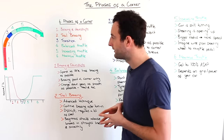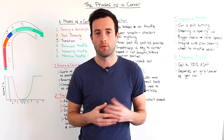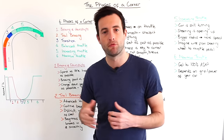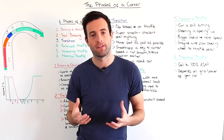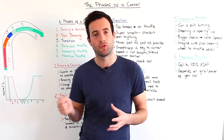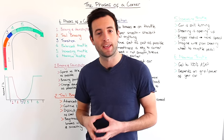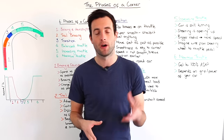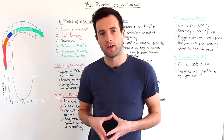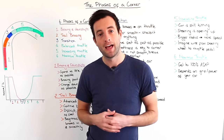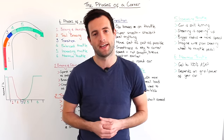Another thing to think about when braking is that you may have to change down one, two, three, even four gears before you get to the corner. If you're in a manual car it's very important that you do these downshifts as smoothly as possible. If you don't do them smoothly it could upset the rear or the front of the car — whichever is the driven axle — and it can unsettle and decrease your ability to slow the car down.